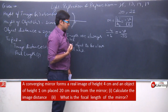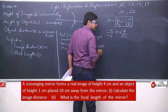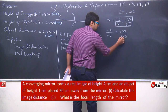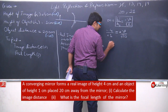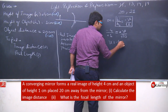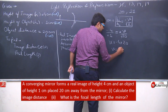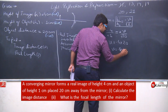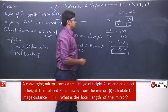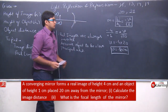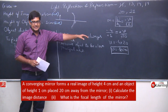u is the object distance, which is 20 centimeters but negative, so it is −20. Now let us solve: the negatives cancel, and bringing 20 to the other side, we get v = −4 × 20.